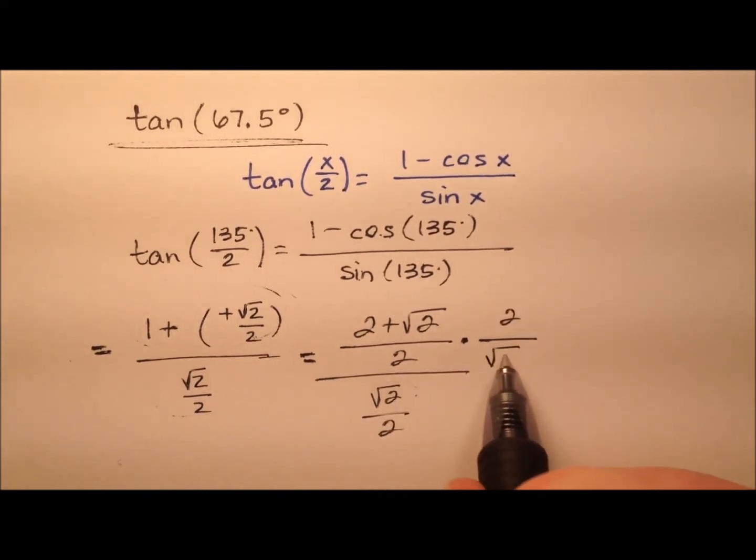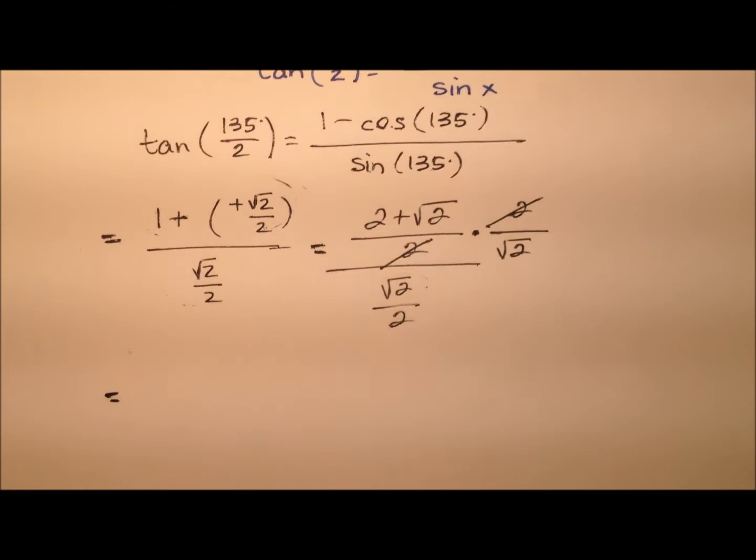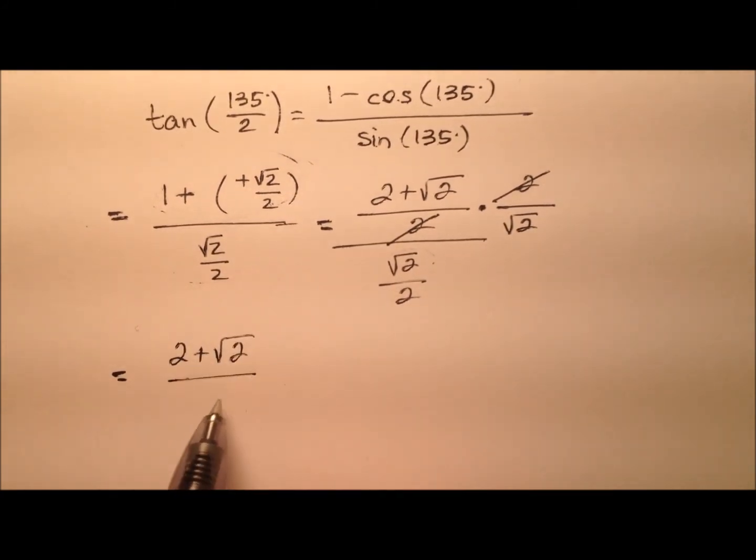So it'll be 2 over the square root of 2, which is really nice because those 2's will cancel. And I'm left then with 2 plus the square root of 2, all divided by the square root of 2.